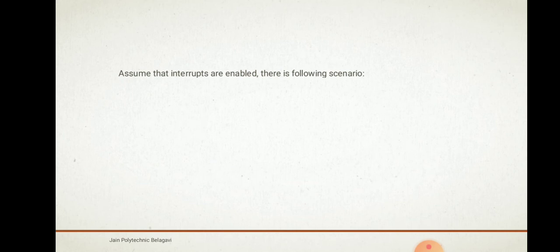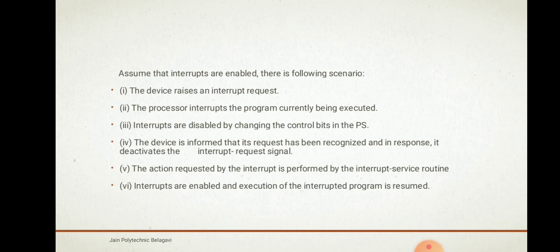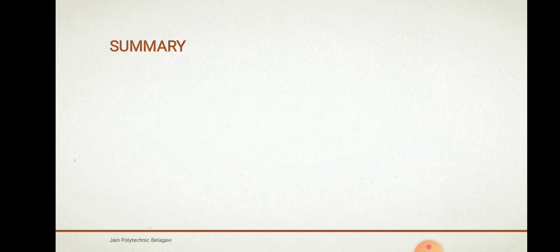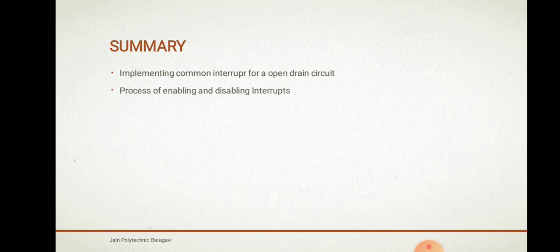Now assume that interrupts are enabled. The following scenario applies: the device raises an interrupt request; the processor interrupts the program currently being executed; interrupts are disabled by changing the control bits in the PS register; the device is informed that its request has been recognized and in response it deactivates the interrupt request signal. We have discussed implementing a common interrupt line using an open drain circuit and the process of enabling and disabling interrupts. Thank you.